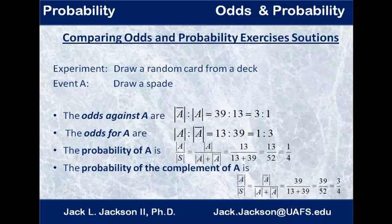The odds for A are just a reciprocal relationship, 13 to 39, or reduces to 1 to 3. So notice we can reduce odds.